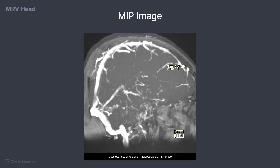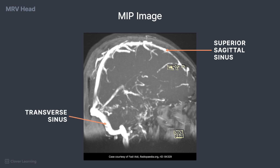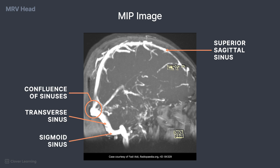MRV scans demonstrate the venous drainage of the head, occurring in the venous sinuses. These sinuses are located between the endosteum and the meningeal dura, or between the layers of the dura mater. These channels do not contain valves like other veins in the body. In this image, the superior sagittal sinus is demonstrated as the most superior bright signal. The transverse sinus can be seen emerging laterally from the confluence of sinuses, which is where the superior sagittal and transverse sinuses meet. The sigmoid sinus is located more inferiorly and is named due to its S-shaped appearance. The straight sinus is located in the line of the junction of the falx cerebri and the tentorium cerebelli.